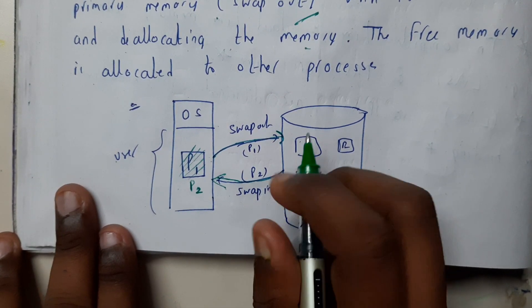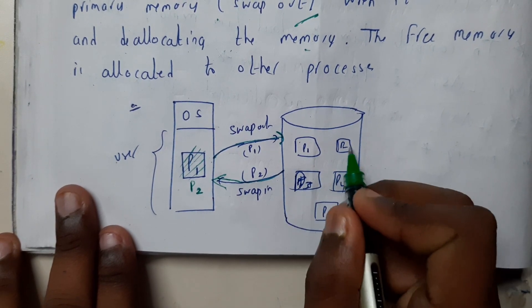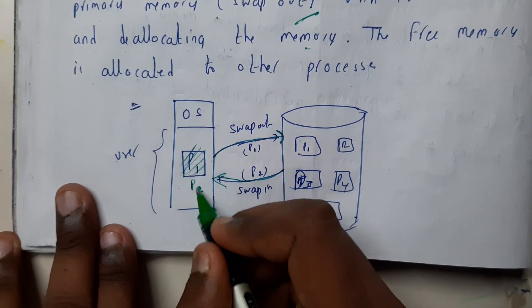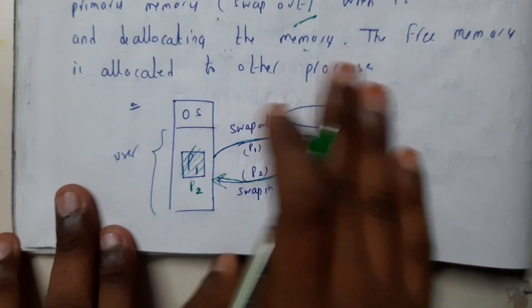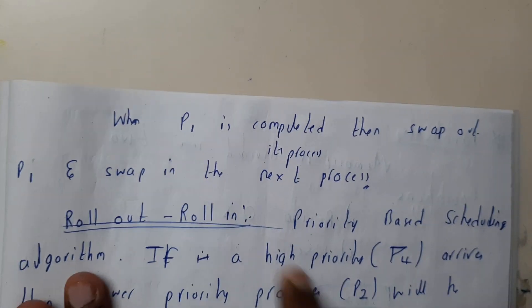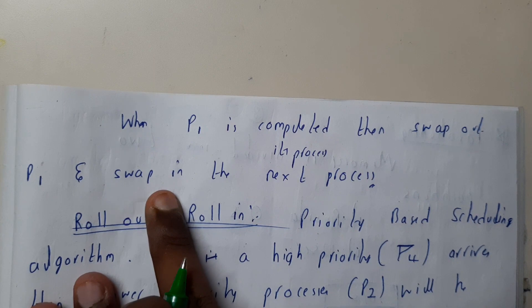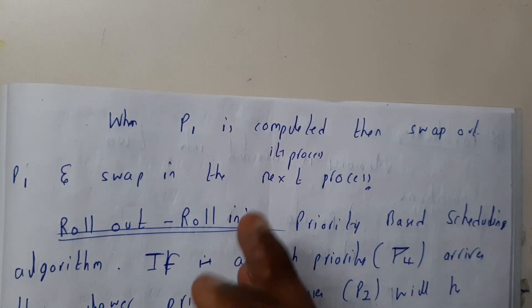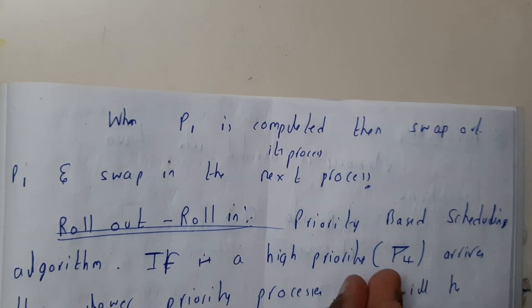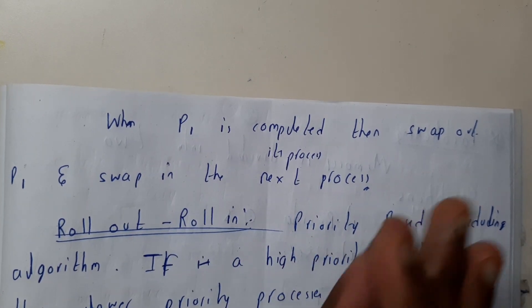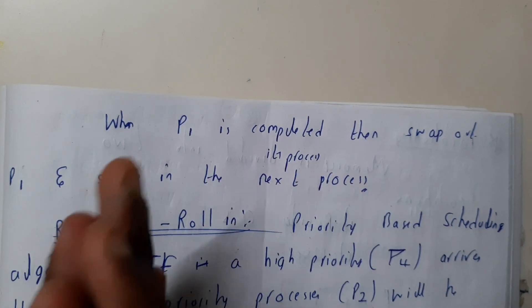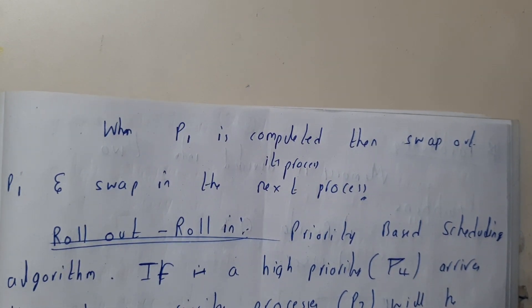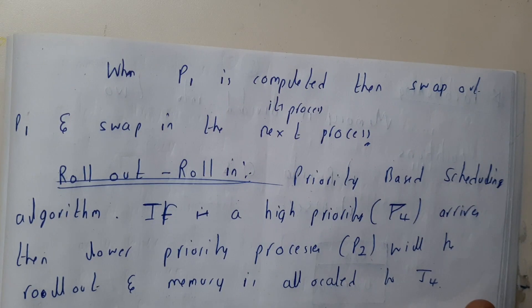A hole is an empty memory location. Now P2 is swapped in, so in place of P1 we have P2. This block is the user space and this is the operating system. When P1 completes its execution, it is swapped out from memory and moved to disk, and a new process is swapped in from disk into main memory.